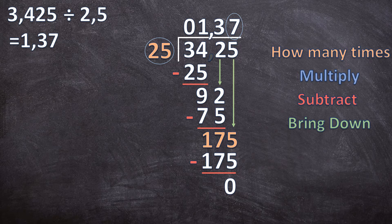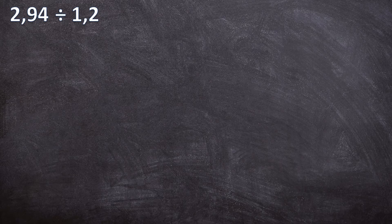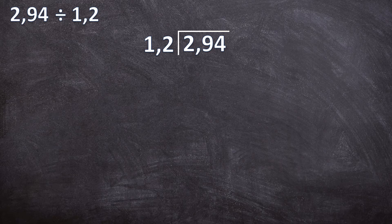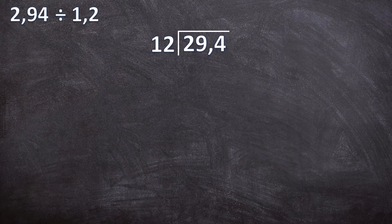Now let's have an example for when we don't exactly end with a zero. For the last example we have 2,94 divided by 1,2. We set up the long division bar, dividend inside, divisor in front. We don't want to divide by a decimal, so we move the comma one place to the right for the divisor and the same for the dividend, giving us 29,4 divided by 12. We write the comma in the answer above the comma in the dividend and ignore the comma.